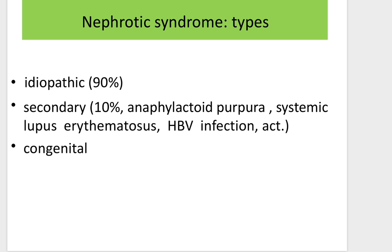Types of nephrotic syndrome: in 90% of cases it is idiopathic — we don't know the cause. In the other 10% it is secondary to other diseases such as anaphylactoid purpura, systemic lupus erythematosus, or hepatitis B virus infection. In some rare cases it can be congenital.